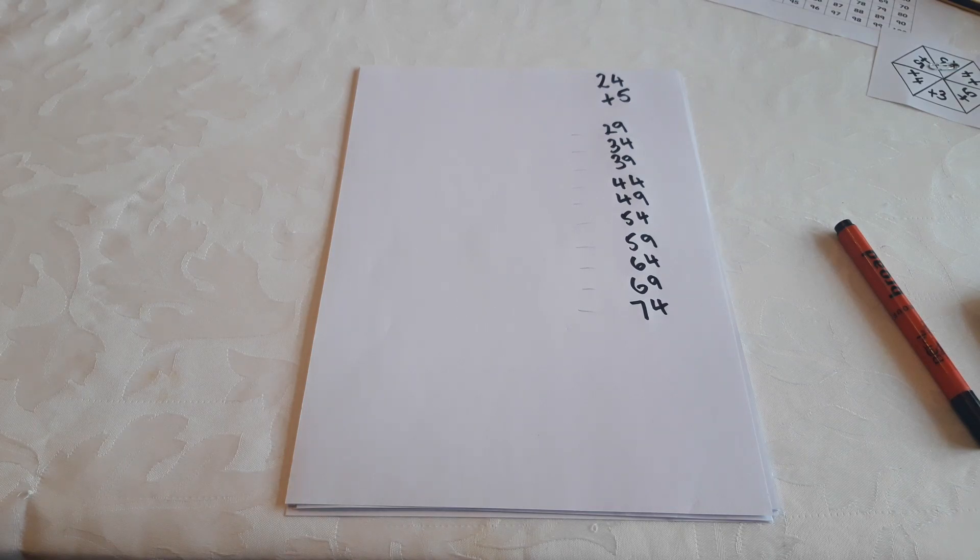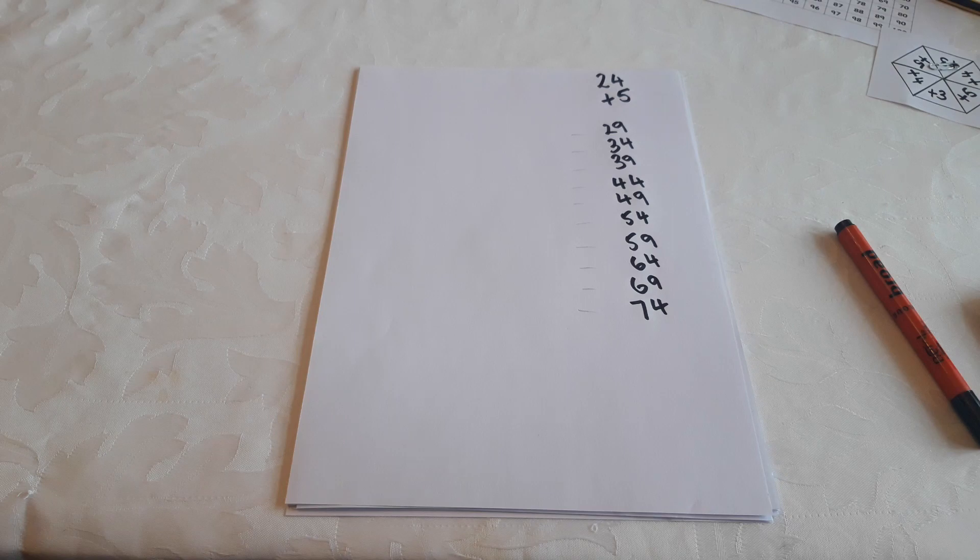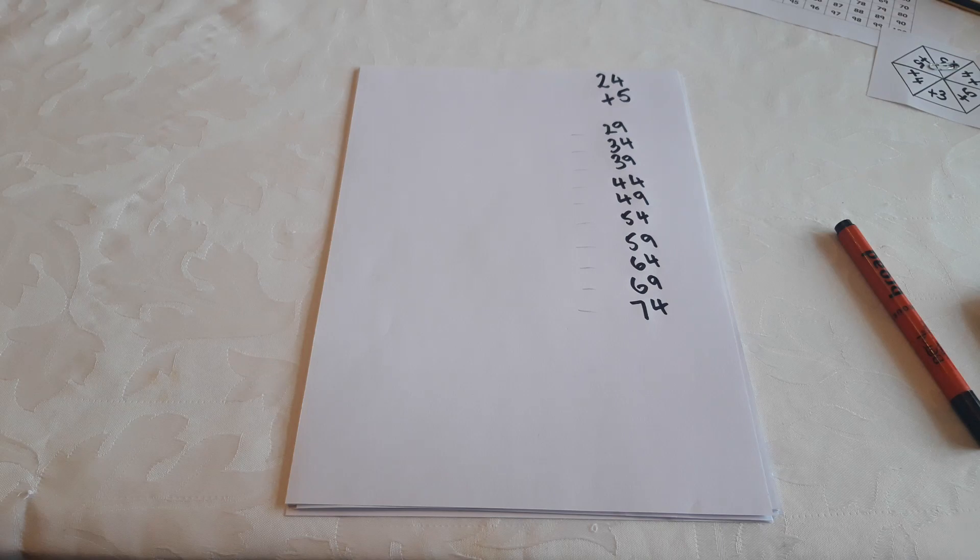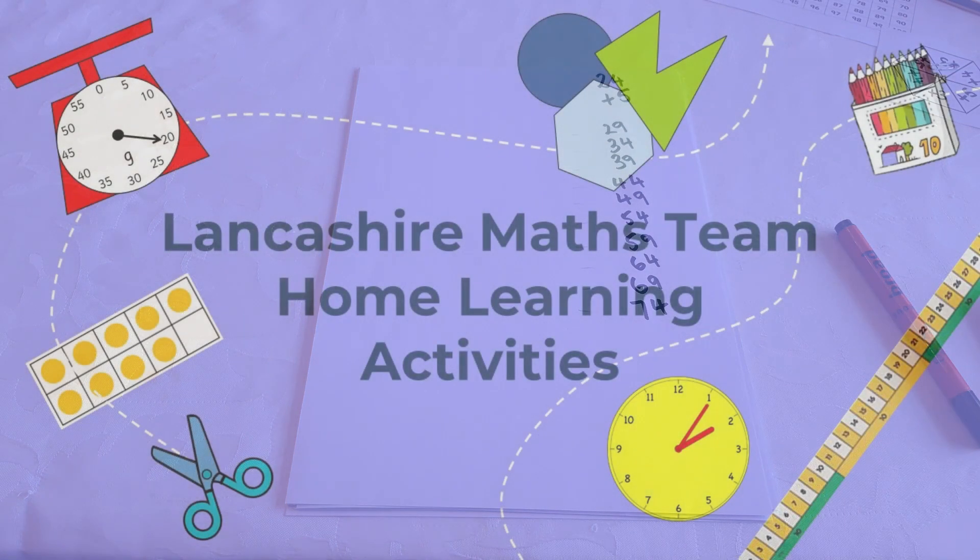On the resource sheet it tells you how this game can be played by different year groups, by choosing a different step size and different starting numbers. If you're playing in twos or threes, see who's the first to reach a particular target number, such as 50 or 100. I hope you enjoy the game. Thanks for watching and I'll see you again soon.